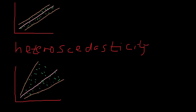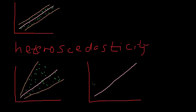Heteroscedasticity could also look like this: you get your regression line and your errors might look something like this, where the variance of your errors is not constant over time but actually decreases over time.